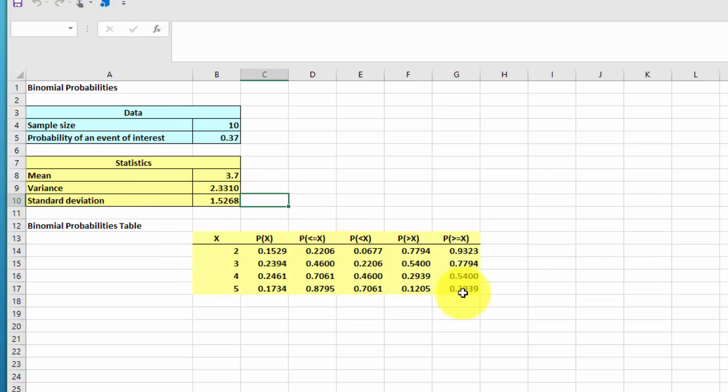But then it gives this neat little table of the probabilities of the various values of x that I put in there from 2 to 5. And the first column is the probability of exactly x. In this case, the probability of exactly 2 is 0.1529.